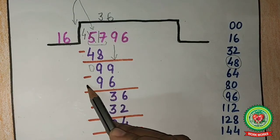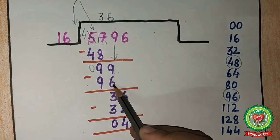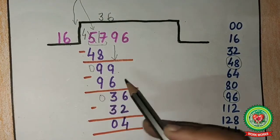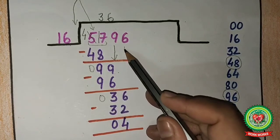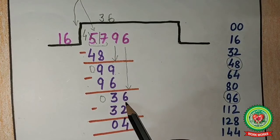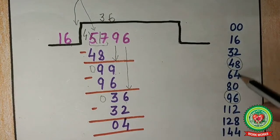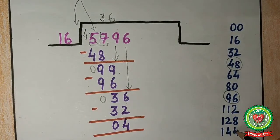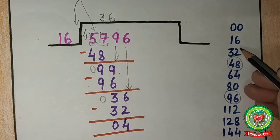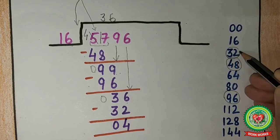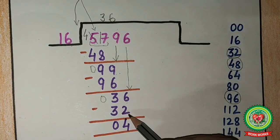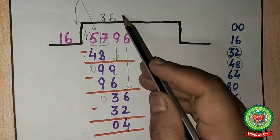Next step is subtract: 9 minus 6 is 3, and 9 minus 9 is 0. Bring down the next number, which is 6. It becomes 36. Again, see the table of 16. 36 does not appear, so we need the number just less than 36. That is 32. 16 times 2 is 32. So 32 comes here and 2 comes up in the quotient.